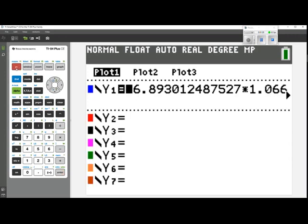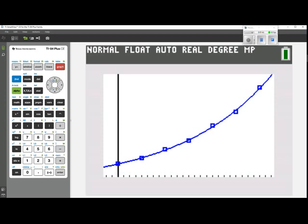And if we press y equals, we'll see that we did paste that equation in there with a whole lot of decimal places to increase the accuracy. The next thing we want to do is graph this model along with the scatter plot. So we can press graph, and there we have that model graphed.